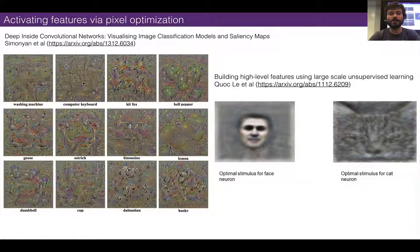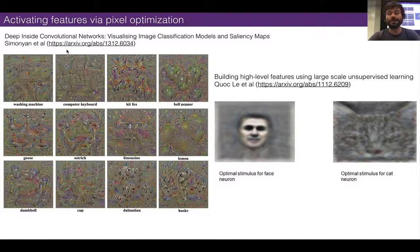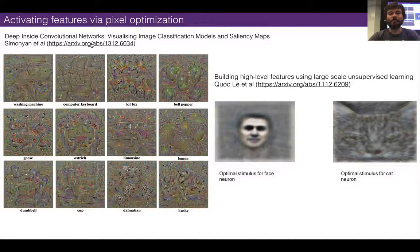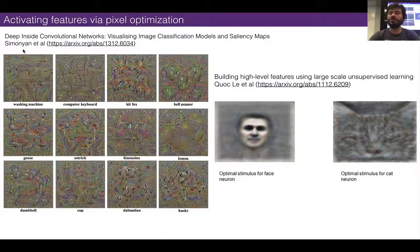That actually predates the 2013 work — this is from around 2009, 2010. There was some work doing exactly that: you have these convolutional neural networks, and you try to visualize what a particular neuron is looking for by synthesizing an image which would maximally activate that neuron. In this case, they were actually trying to maximally activate a neuron designed to distinguish between a bunch of different classes.